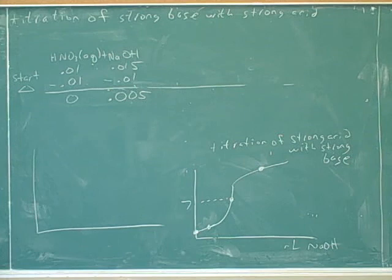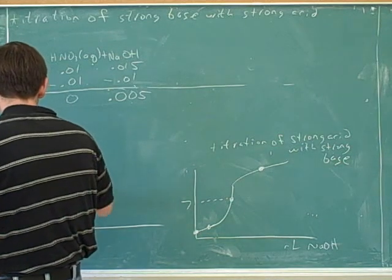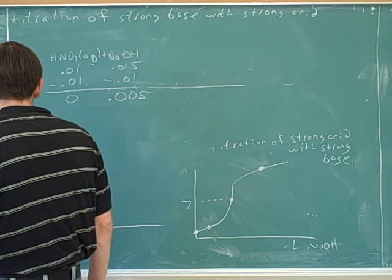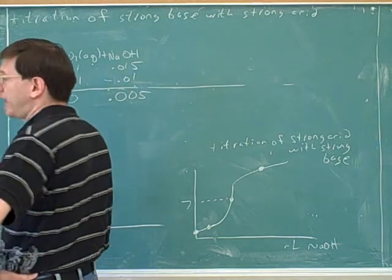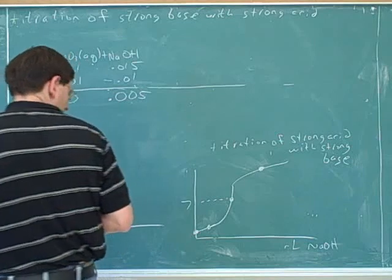Good. Label the equivalence point. And what's the pH there? Seven. Okay. Would that have been correct if it was a strong acid with a weak base? Not quite — that'll be the next thing we talk about, so we'll get to that in a second.